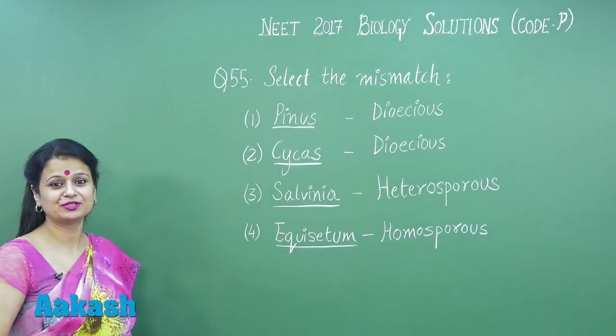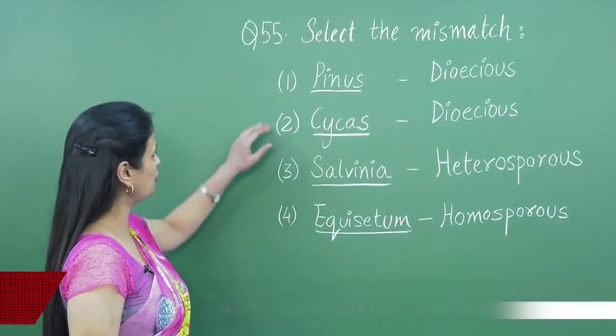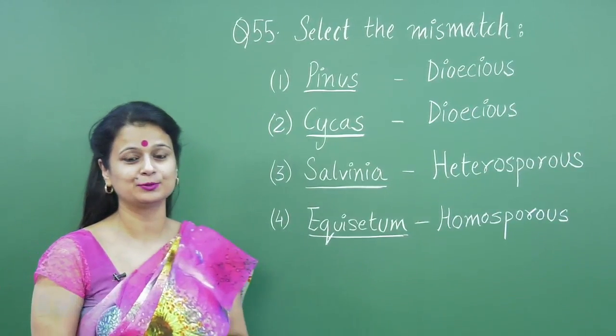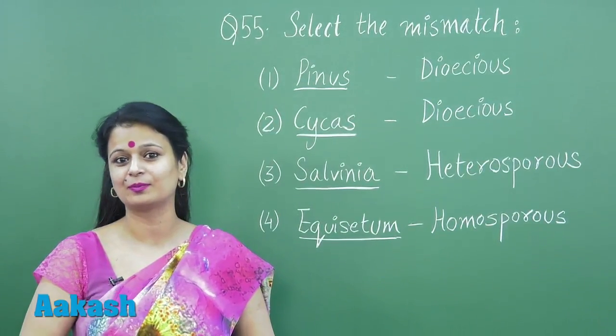So let's discuss question number 55. We have to select the mismatch pair. Now looking into option number one: Pinus is dioecious. Pinus is not dioecious, it is monoecious. That is, male and female cones are present on the same plant body, so this is the wrong match.